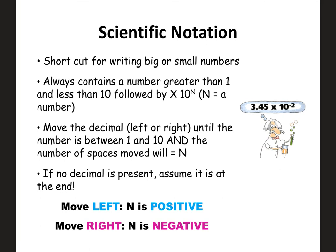I want to briefly talk about scientific notation. This is something you should have seen in previous math classes. The basic reason we use it is because it allows us to write really big or really small numbers using a shortcut. One number we use in chemistry is 6.02 times 10 to the 23rd — if you had to write that out every time, that would be a pain. The key is you always have a non-zero digit followed by a decimal point, and then the remaining numbers times 10 to a power.